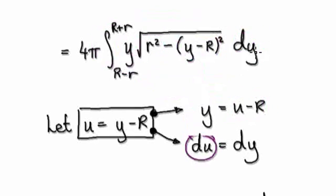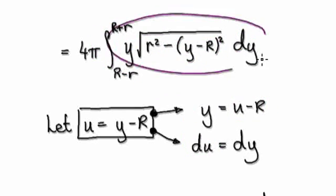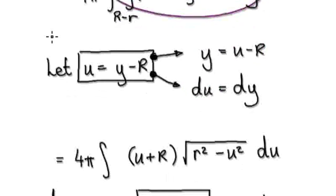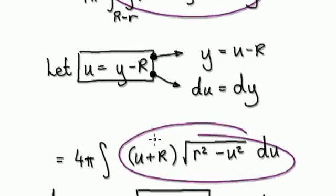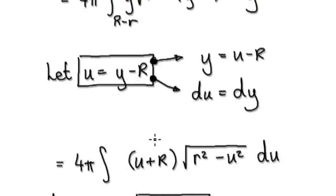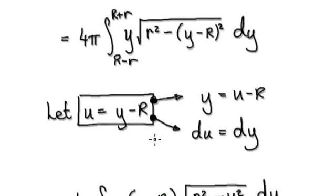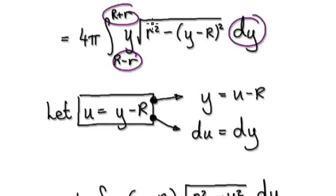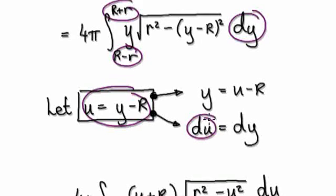So this whole thing here will then become this new expression. Now, don't forget — we are integrating with respect to y from one limit to another. Because we made this substitution, we are now working in terms of u, du. So we need to make the adjustment to the limits of integration.